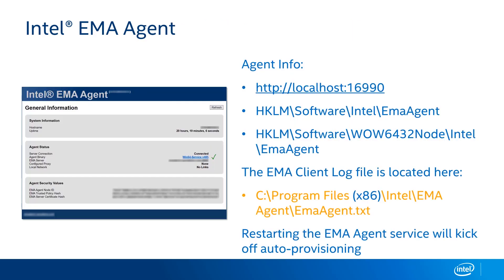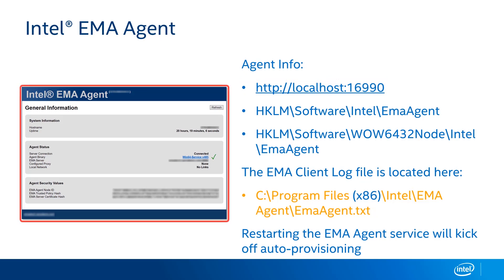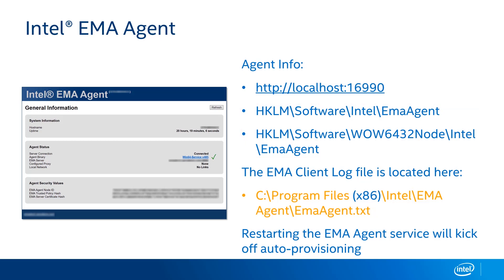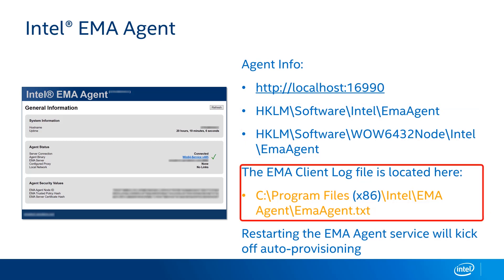Let's talk about the Intel EMMA agent. Once installed on a client, you can get diagnostic information by going to the agent web page at http://localhost:16990. There you'll see basic information about the hostname, and most importantly a green check mark indicating the agent has connected to your Intel Endpoint Management Assistant server on the back end. Registry information is also stamped in the keys listed, and basic logging is provided in the Program Files (x86)\Intel\EMMA Agent\emma_agent.txt file.